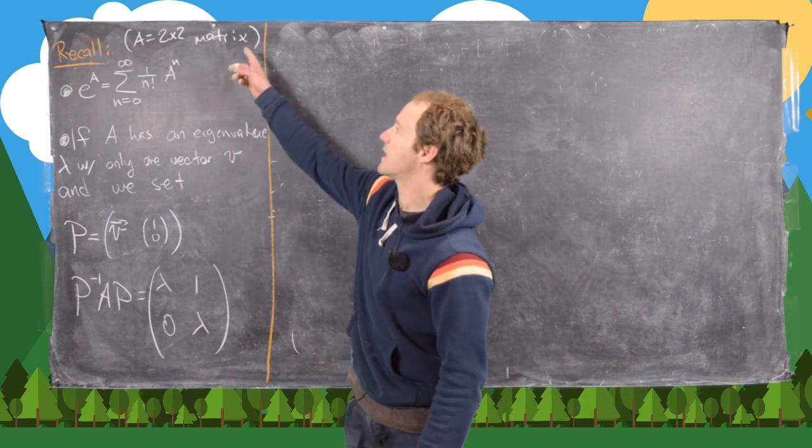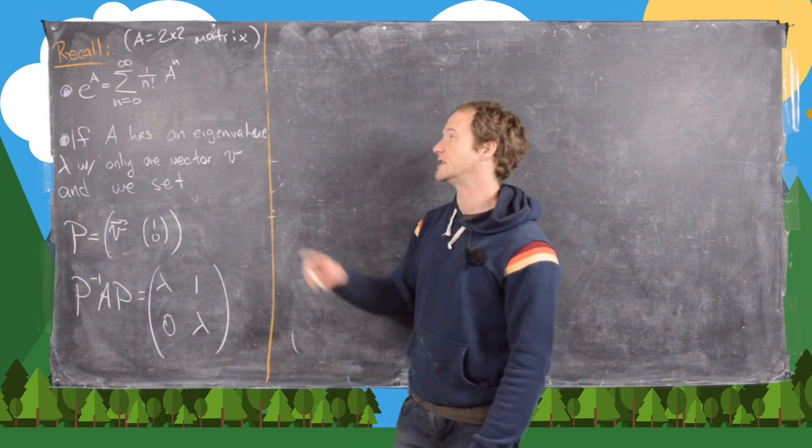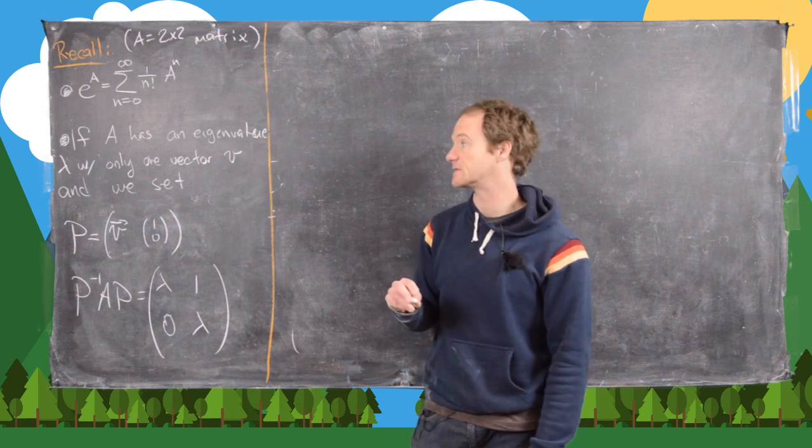So let's recall that if we have a 2×2 matrix A, we can define the matrix exponential as follows. It looks like a Taylor series expansion of the function e^x evaluated at this matrix.